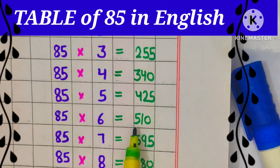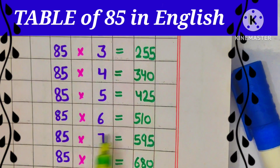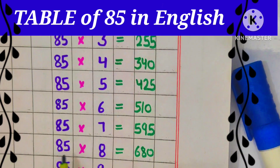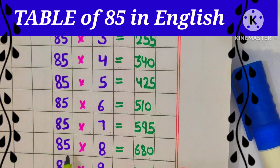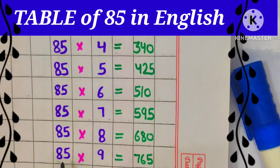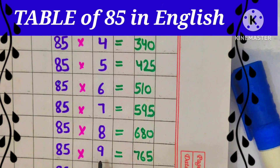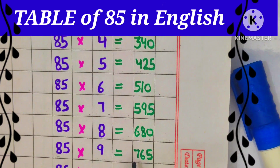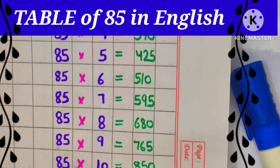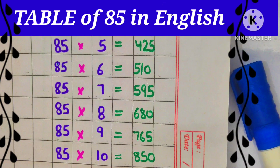85 6s are 510, 85 7s are 595, 85 8s are 680, 85 9s are 765, 85 10s are 850.